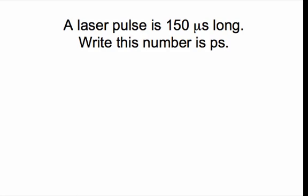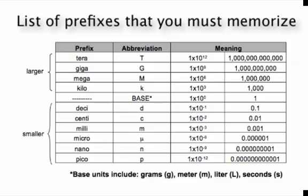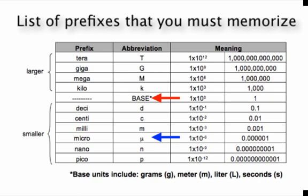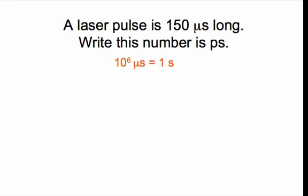A laser pulse is 150 microseconds long — write this in picoseconds. If you're learning this for the first time, always go through the base unit and ask the three questions. The base unit between microseconds and picoseconds is seconds. First conversion: microseconds to seconds. Seconds is larger; you need more microseconds. How many? 10 to the positive 6 microseconds equals 1 second.